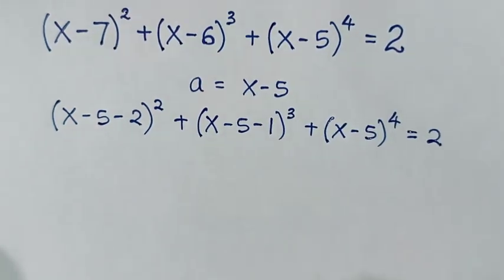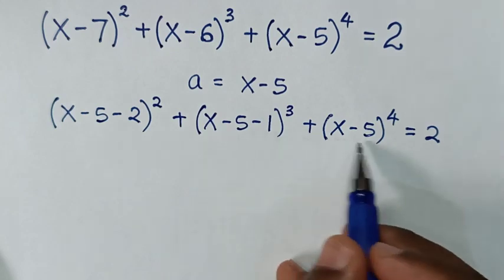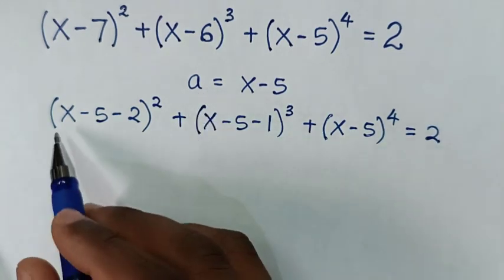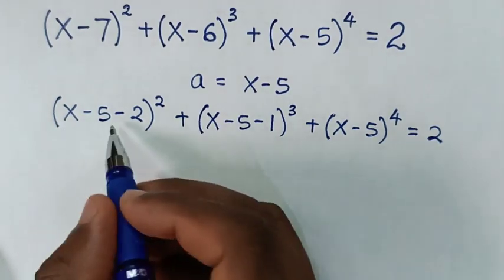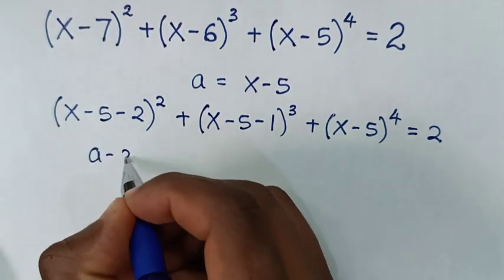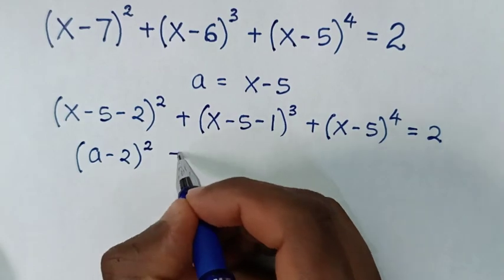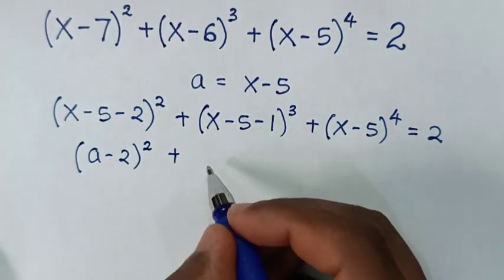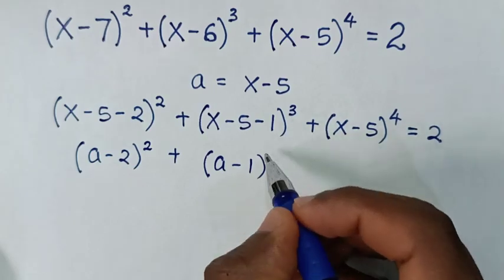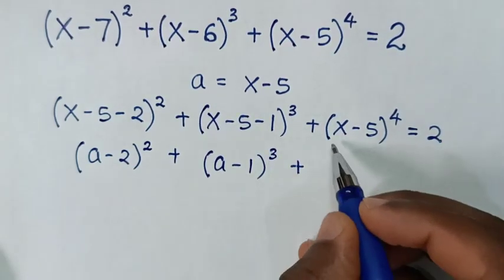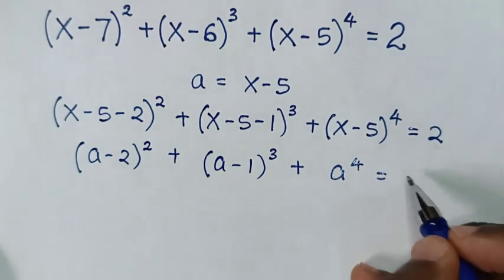From this equation, x-5 is common, so we let a = x-5. Then it becomes (a-2)² + (a-1)³ + a⁴ = 2.